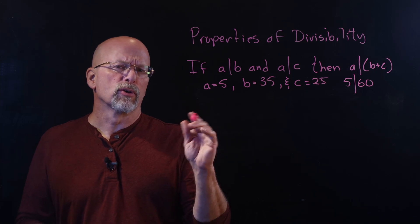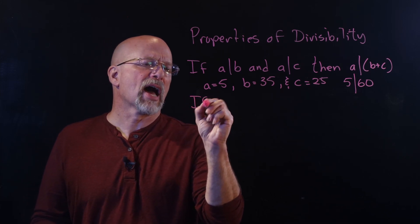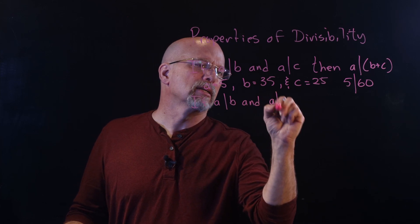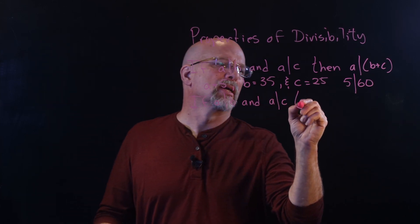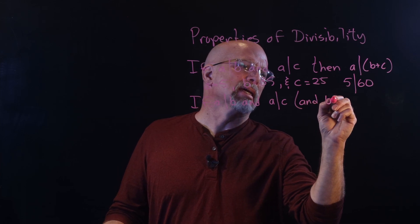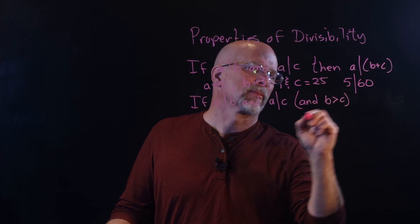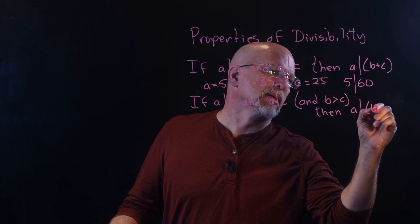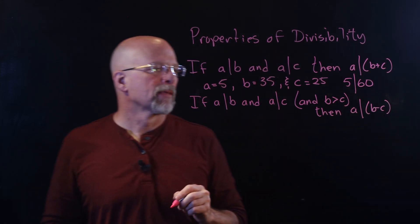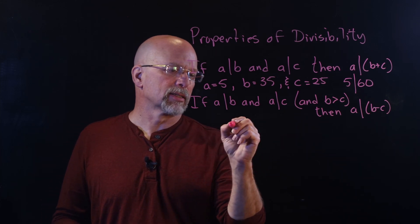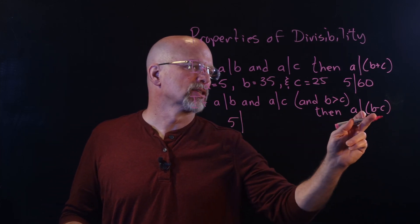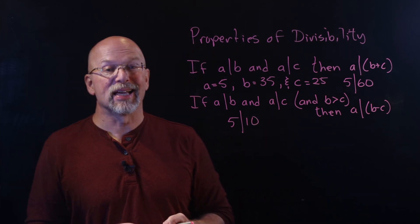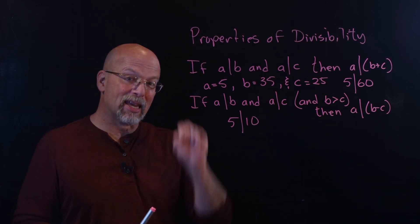The same is true for subtraction. If A divides B and A divides C, and B is greater than C, then A divides B minus C. With our example: 5 divides 35 minus 25, which is 10, and 5 does go into 10 twice.